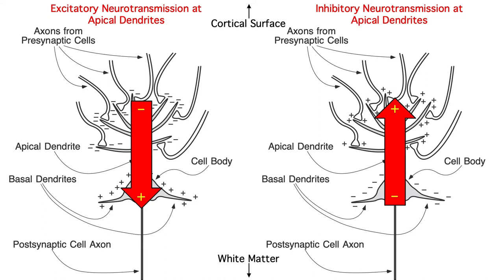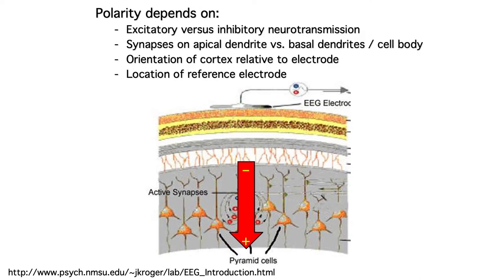From this, you might think you could use the polarity of an ERP to determine whether you have excitation or inhibition. But sadly, you'd be wrong. There are several different factors that combine to determine whether we see positive or negative at our scalp electrodes. We can't usually draw any conclusions from whether a component is positive or negative.